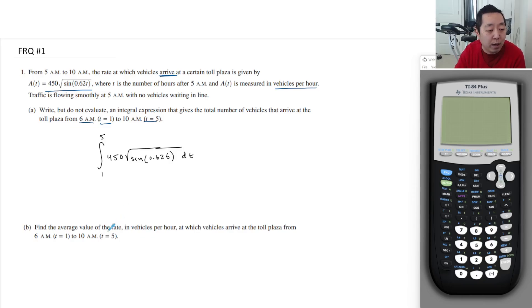Find the average value of the rate. Average value of the rate in vehicles per hour in which the vehicles arrive at the toll plaza from 6am to 10am. Okay, so average of the rate means that if I want to do average value, you do 1 over the interval width times the integral of what you're trying to find the average value of. So this is the function I'm trying to take the average value of. I'm trying to find the average value of the rate. So I am integrating that rate from 1 to 5 and dividing by the interval width. And we will probably use units for this one. So let's clear this out.